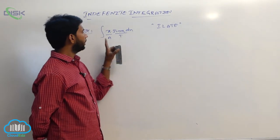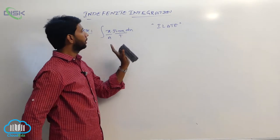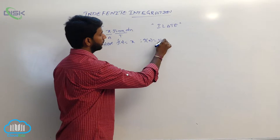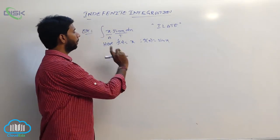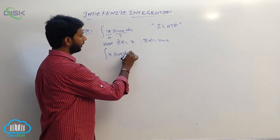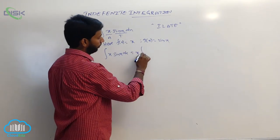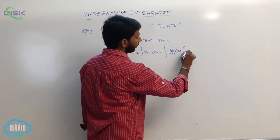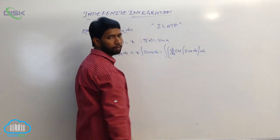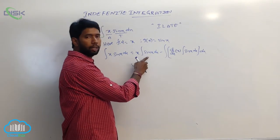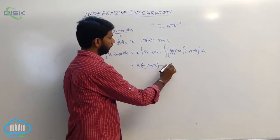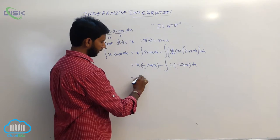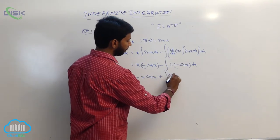From the word ILATE, the first function is taken as x and the second function is taken as sin(x). So f(x) = x and g(x) = sin(x). Applying integration by parts: integral of x·sin(x) dx equals x into integral of sin(x) dx, minus integral of d/dx of x into integral of sin(x) dx, whole dx. That is x into (−cos x) minus integral of 1 into (−cos x) dx.